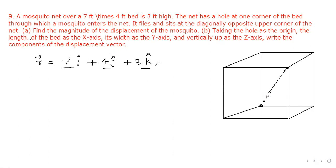This is x-axis, this is y-axis, this is z-axis. Here information is given. Length of the bed as x-axis, so 7 feet is the length. And the width as y-axis, 4 feet is the width and 3 feet is the height. Now we have to find out its magnitude. So the magnitude or modulus r, that is equal to 7 square plus 4 square plus 3 square. So that will be equal to root 74 feet.